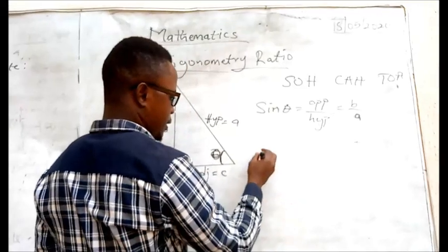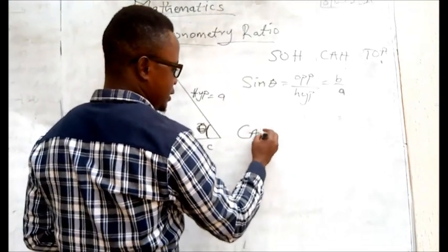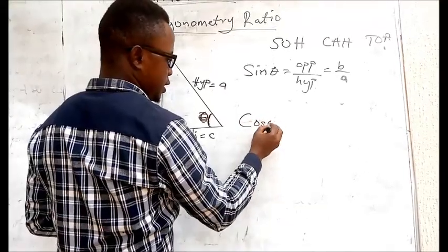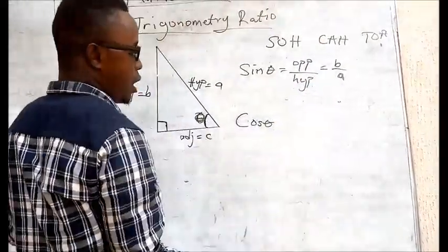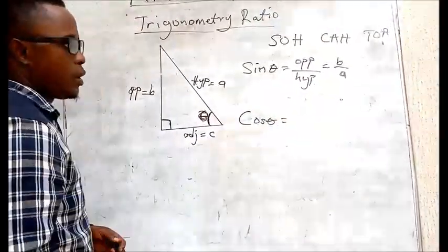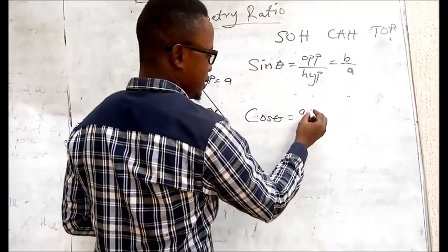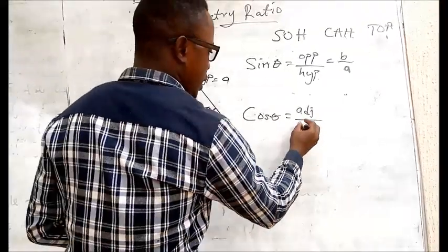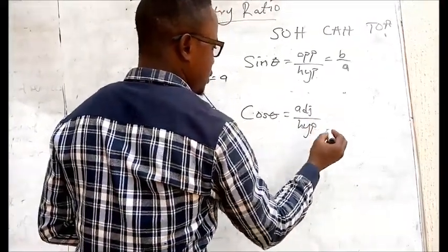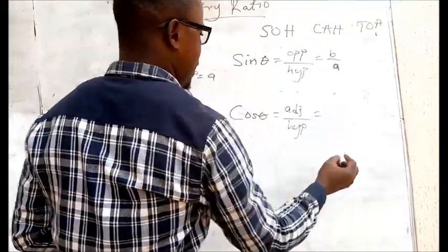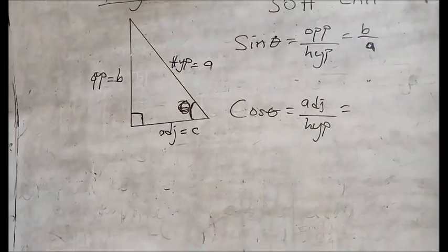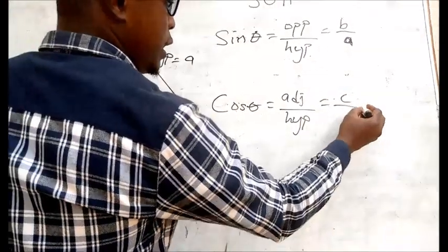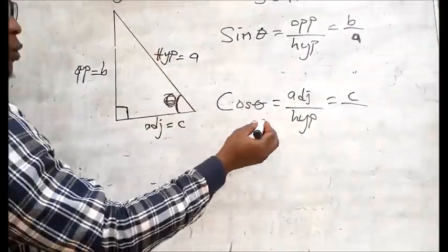Then we look at the second one, which is your CAH. The CAH gives us cosine theta, because this is cosine, equals to A over H — the A there is our adjacent and the H is our hypotenuse. So representing them by the alphabetical labels we gave: the adjacent is C, all over the hypotenuse, which is A.